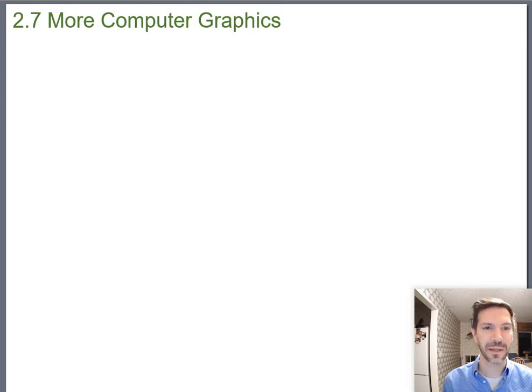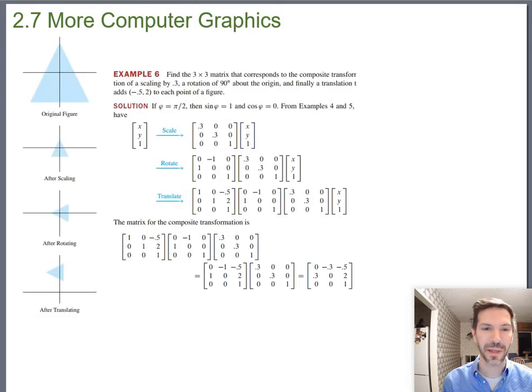But I just wanted to reinforce the idea of combining various transformations. The book had a nice example. I thought this is example six out of the book. They're using homogeneous coordinates here. So they say find the three by three matrix that corresponds to the transformation of a scaling by point three. So keep in mind, scaling just means multiply. So multiplying the x and y coordinates by point three. Also, a rotation of ninety degrees about the origin.